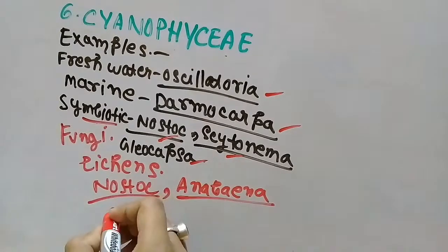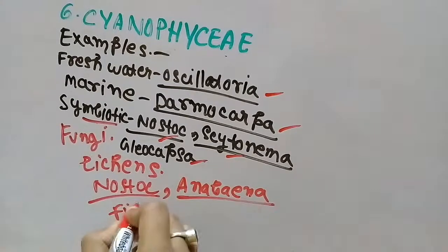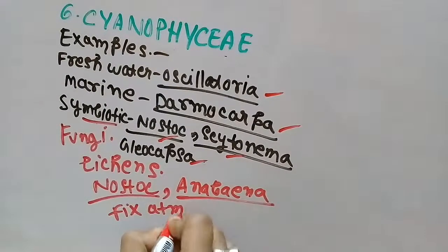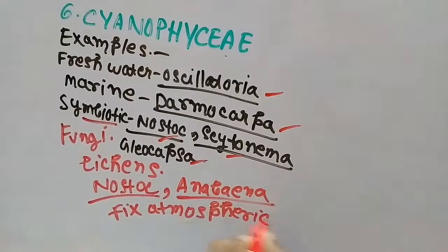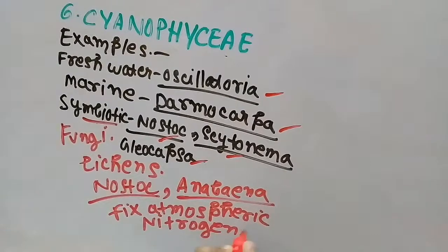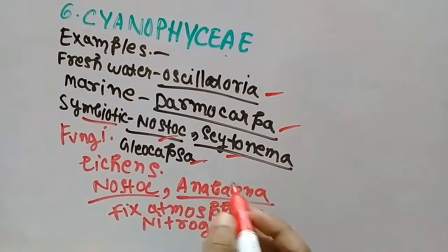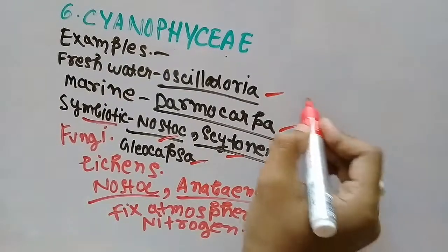Nostoc and Anabaena are very important Cyanophyceae as they can fix the atmospheric nitrogen. They help to fix the atmospheric nitrogen and as a result they increase the soil fertility.